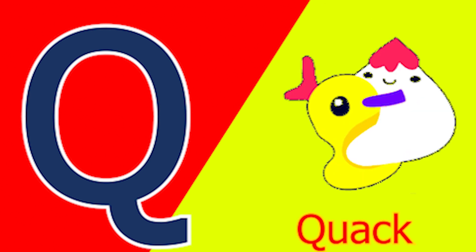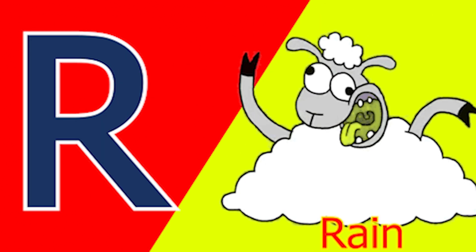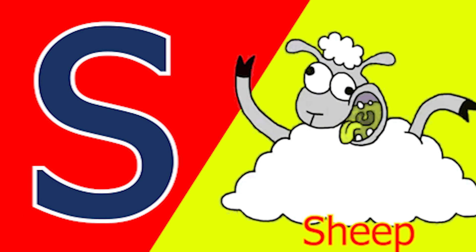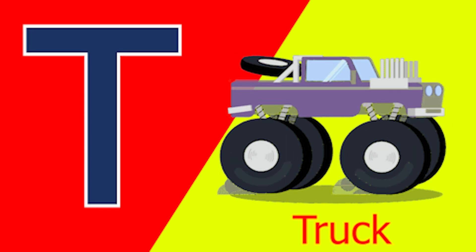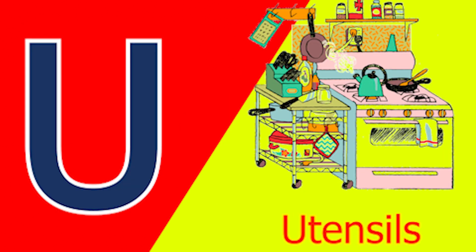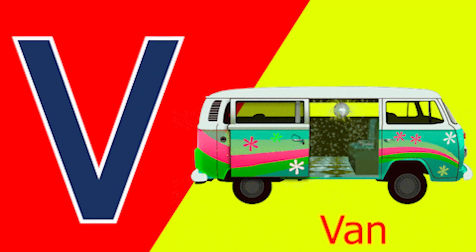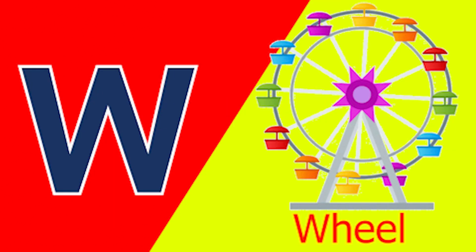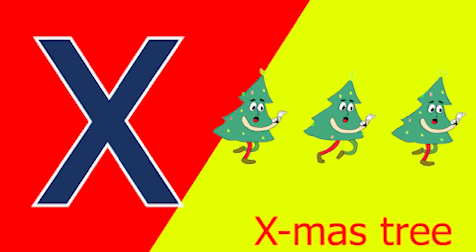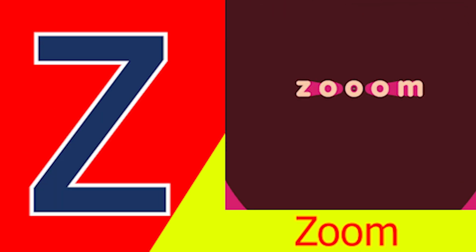Q for quack and R for rain, S for sheep and T for tub, U for utensil, V for van, W for wheel and X for accessory, Y for yacht and Z for zone.